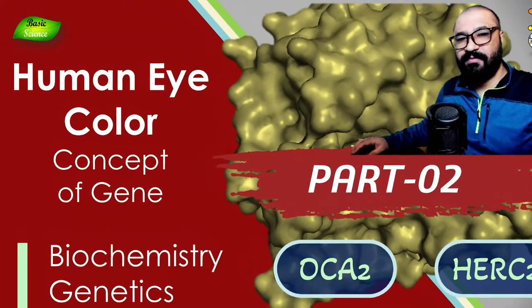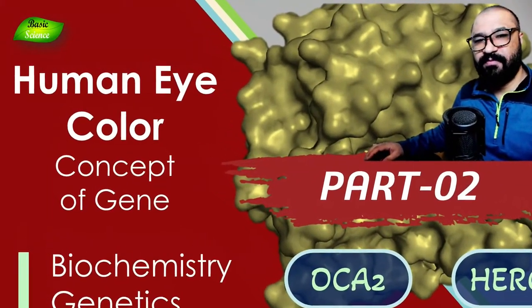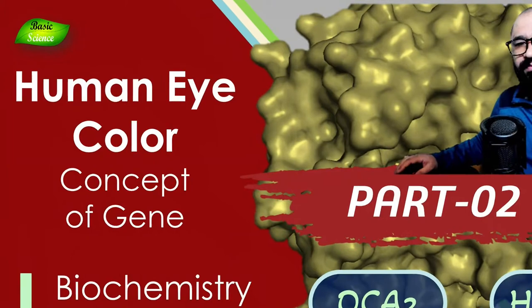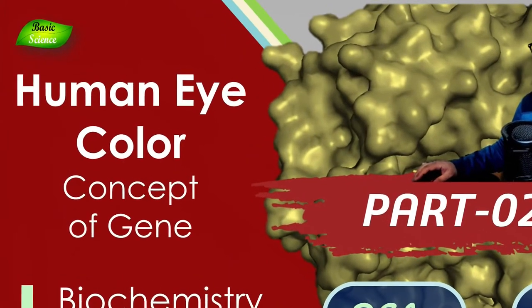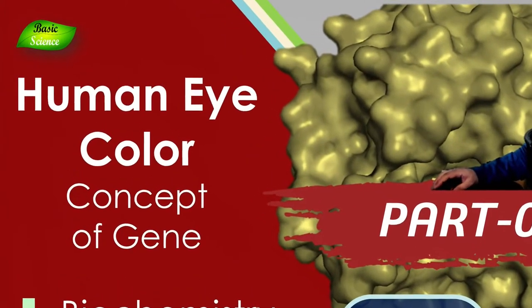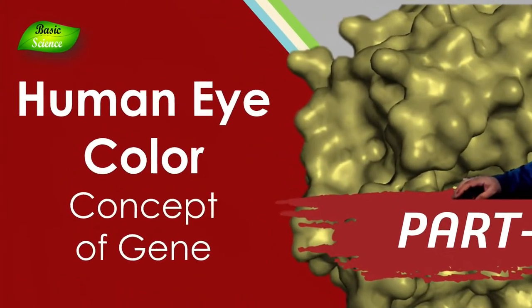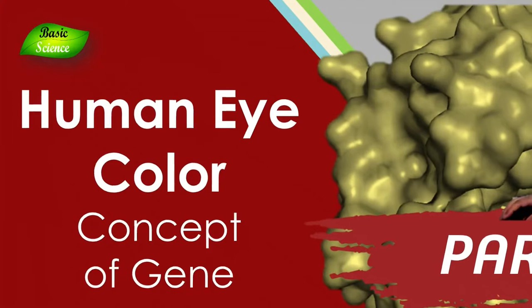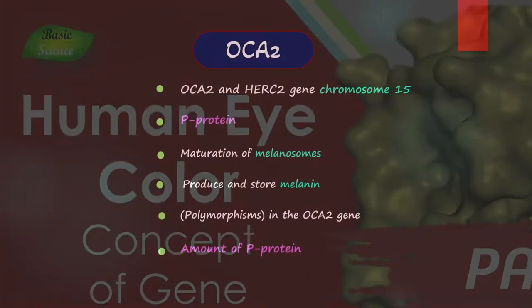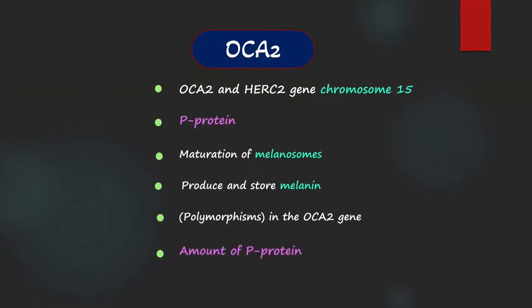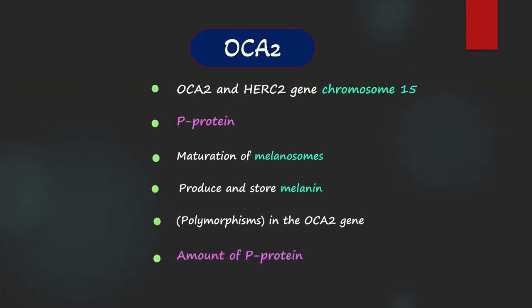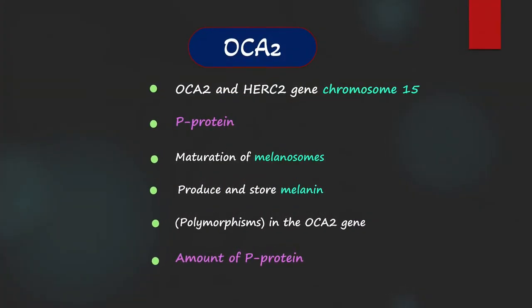In the previous video, I explained the concept of gene by taking the example of human eye color. In this short presentation, I will explain the role of OCA2 gene and how it controls the eye color in humans.